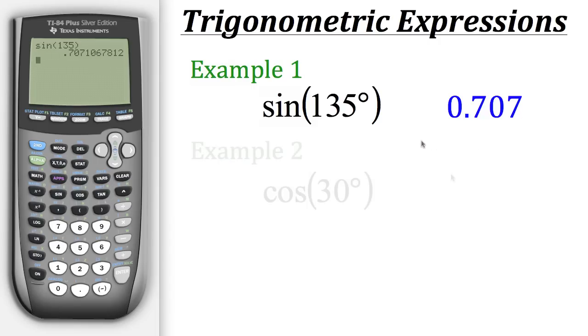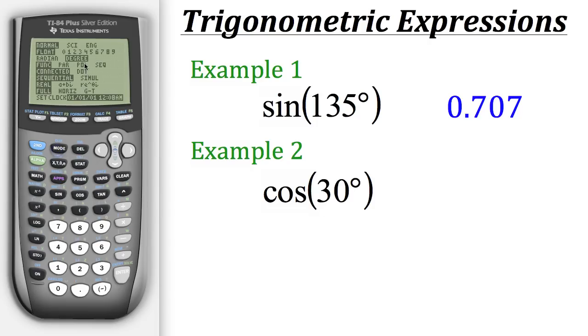Let's go on to another example. This time we want to find the cosine of 30 degrees. In this case, our angle is being measured in degrees again, so we can just leave it in degree mode.